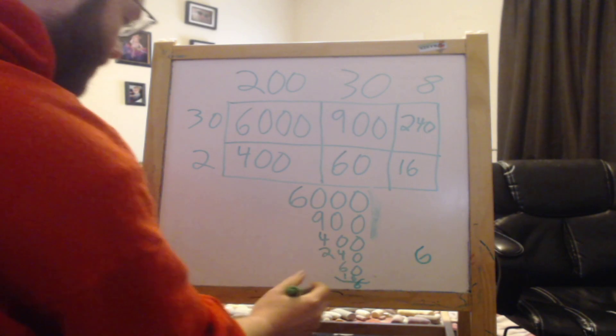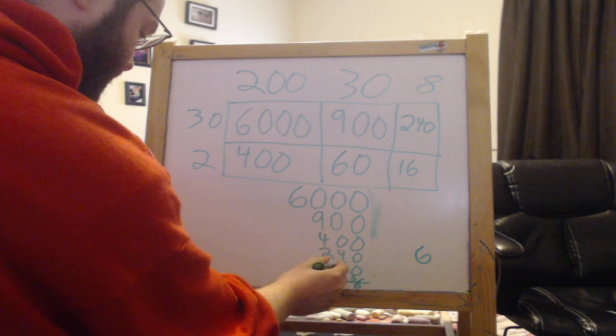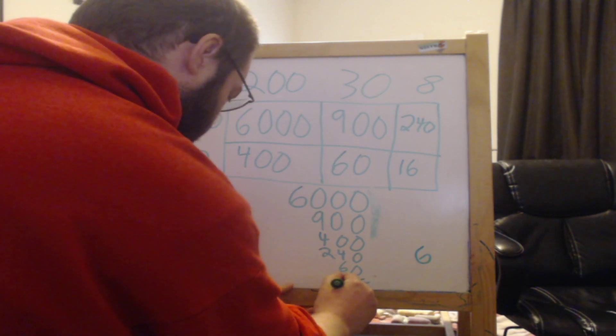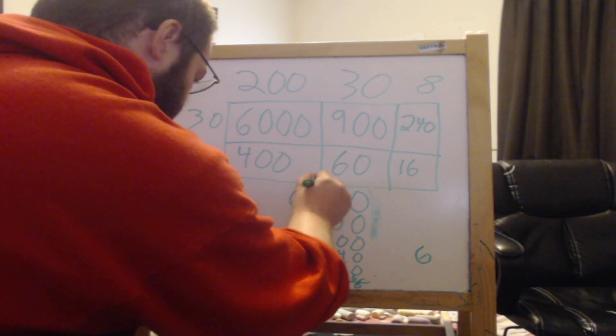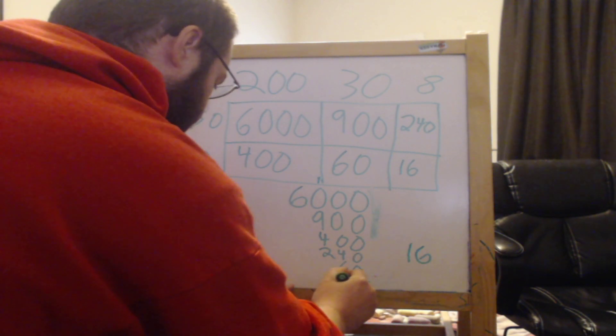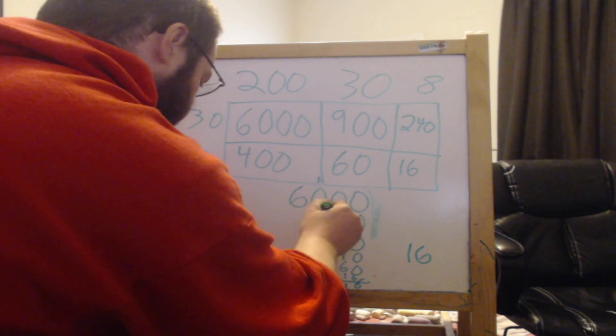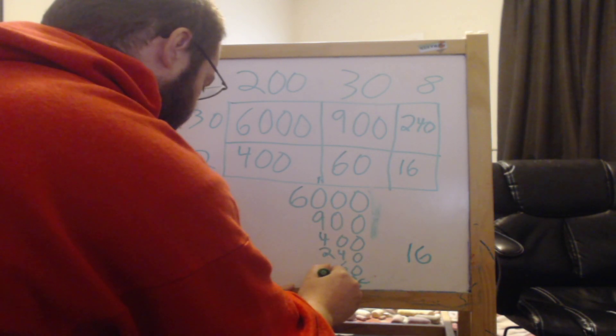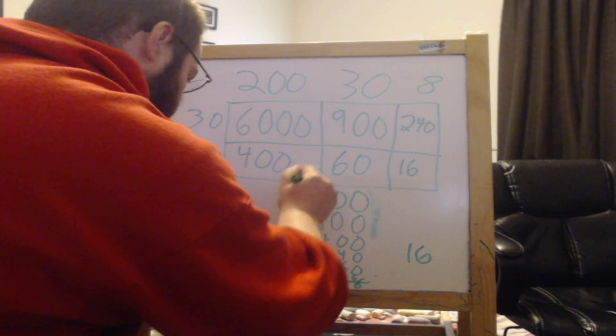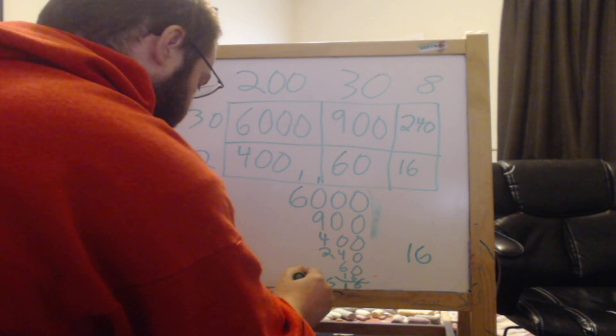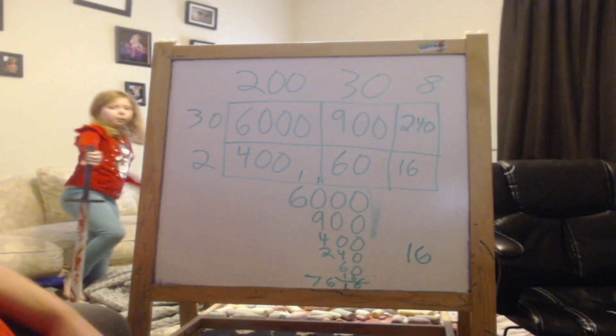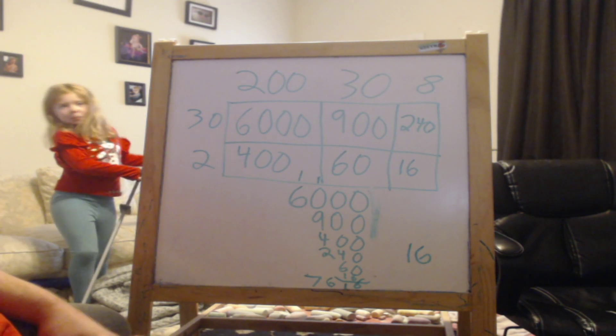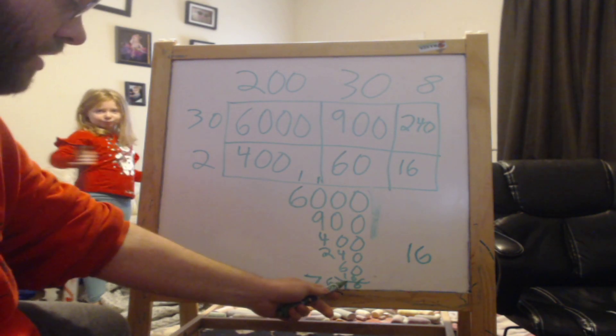0s plus 6. 4 plus 6 is 10, plus 1 would be 11. Then carry the 1. Okay. 1 plus 9 is 10, 4 plus 2 is 6, so this would be 16. Carry the 1. 1 plus 6 is 7. So the answer once again is 7,616.